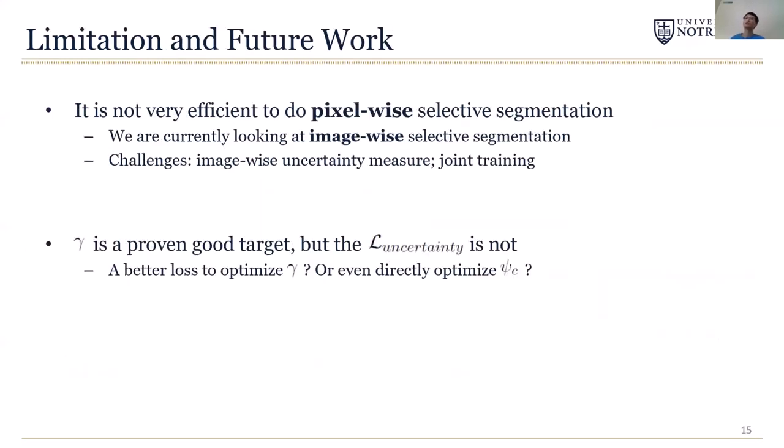The main limitation of this work is that we assume pixel-wise selective segmentation. In practice, it is not efficient to leave individual pixels for radiologists to label. It would be more desirable to have image-wise selective segmentation. The challenge of doing that is we will need an image-wise uncertainty measure instead of a pixel-wise uncertainty measure. Also, the uncertainty-aware training will become difficult because in order to do image-wise comparison, we need to put these images in memory and this will clearly be subject to available memory.